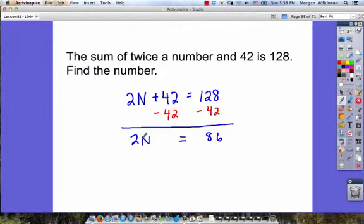So 2 times some number is equal to 86. Can you figure out what that number is in your head? It must be half of 86, because we've got to multiply the number times 2 to get there. So it must be 43.